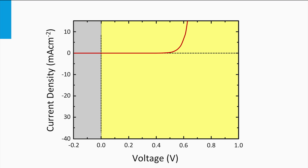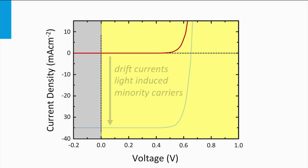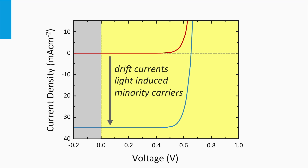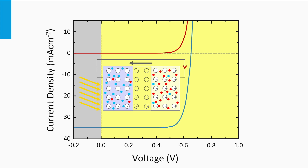Looking at the IV curve again, the red line corresponds to the IV curve of the diode in the dark. Adding the photocurrent shifts the typical IV curve downward along the vertical axis in the direction of negative currents, relative to the forward bias direction of the diode. This circuit is the circuit for an ideal solar cell, meaning we have not yet included all types of electrical and optical losses — we will come back to that later this week.